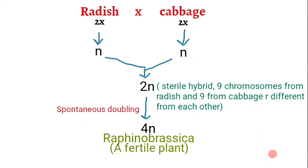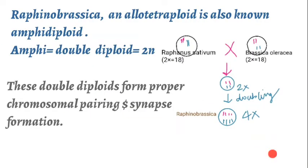Spontaneous chromosome doubling leads to tetraploid Raphanobrassica — a fertile plant able to produce its own gametes. Raphanobrassica is an allotetraploid, also known as an amphidiploid. 'Amphi' means double diploid, meaning each chromosome has its own homologous partner, allowing proper chromosome pairing and synapsis formation.